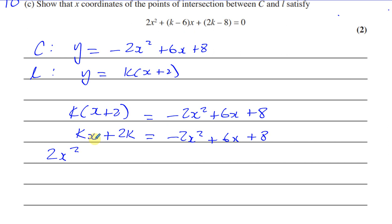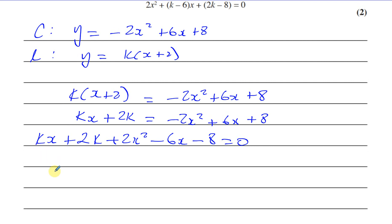So here we're going to have k times x plus k times 2, which is 2k, equals minus 2x squared plus 6x plus 8. And they want us to write in this form with the 2x squared positive. So I'll bring everything onto this side here. So I'll have 2x squared. I'm going to write all the X terms together. I have kx plus 2k plus 2x squared minus 6x and minus 8.